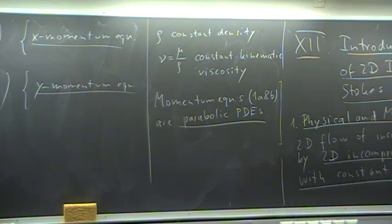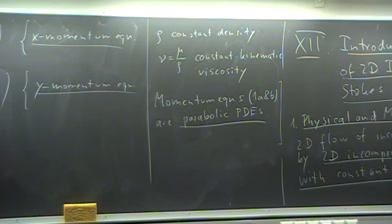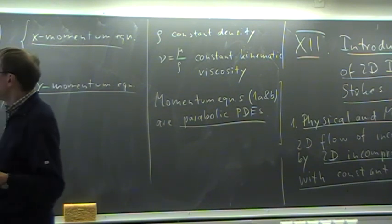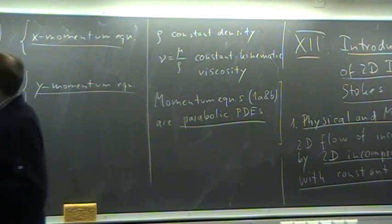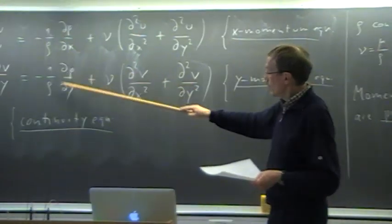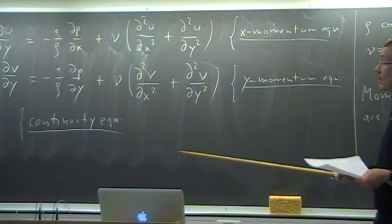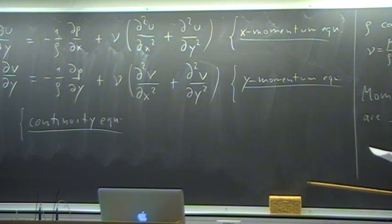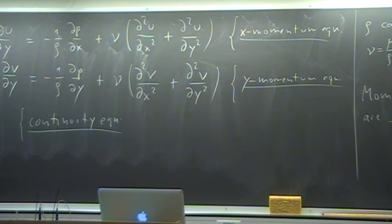So the momentum equations — equations 1a and 1b — are parabolic. That means we have to give boundary conditions everywhere on all boundaries. Common boundary conditions are: at inflow we prescribe u and v; at outflow we usually extrapolate; at a solid wall we have the no-slip condition where u and v are zero (or equal to the velocity of the moving body). The reason it is so important to discuss the convection-diffusion equation is because we can apply it directly for the solution of these momentum equations.